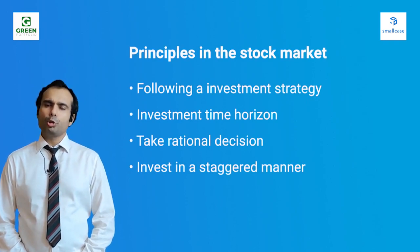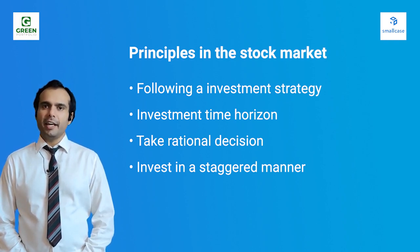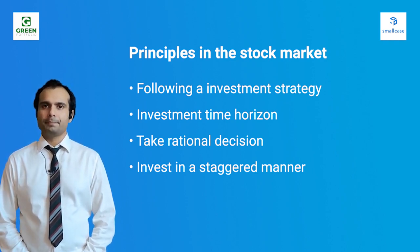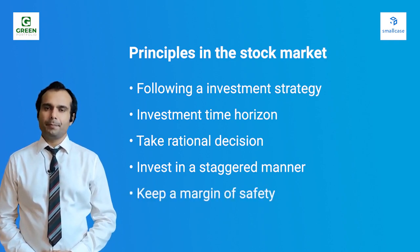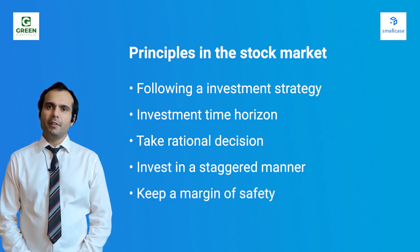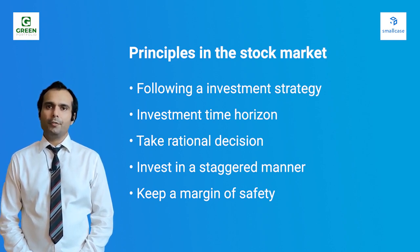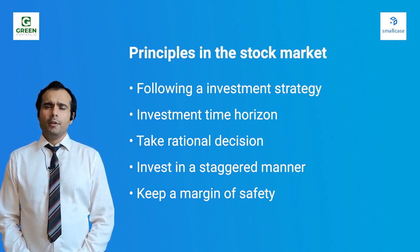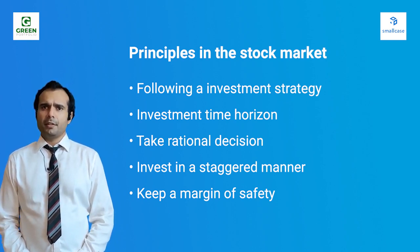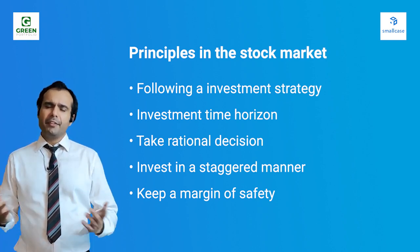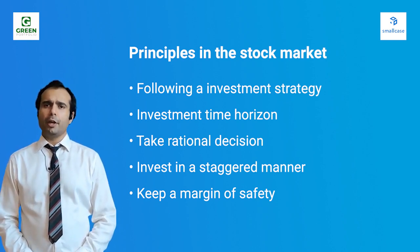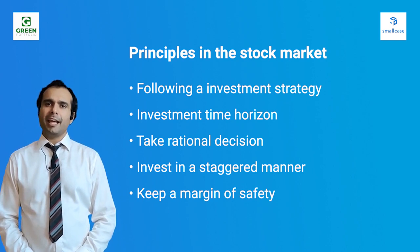Culprit number four is not investing in a staggered manner. You should always buy and sell your investments in a staggered manner. SIP is a great tool to accumulate investments as it helps you average your holding cost. Culprit number five is margin of safety — the difference between the market price and the intrinsic value of the share. Even when buying growth shares, seek a margin of safety so the stock is not overly expensive relative to intrinsic value. This protects against deep corrections during market falls.